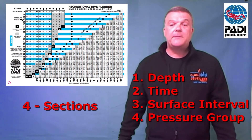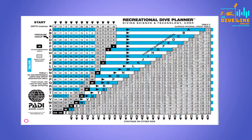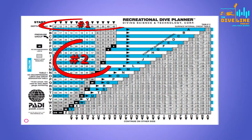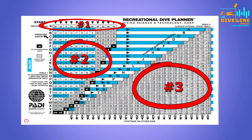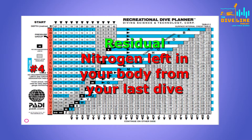Let's look at some of the basics. The RDP table is split into four sections. Number one is depth — if you're a newly qualified open water diver, you can dive to a maximum of 18 metres. Number two is time, the amount of time you can spend underwater at that depth. Number three is surface interval, the amount of time spent on the surface between two dives. And number four, most importantly, is pressure group, denoted by letters. You need to know the pressure group because you need to know how much nitrogen is in your body left over from your last dive — this is called residual nitrogen.